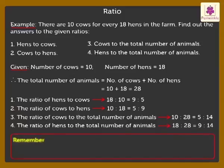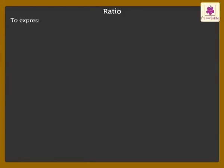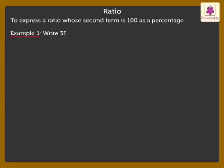Here, as the terms had common factors, we reduced them to their lowest value to find the ratio between them. Now, let us see how to express a ratio whose second term is 100 as a percentage. Write 35 is to 100 as a percentage.